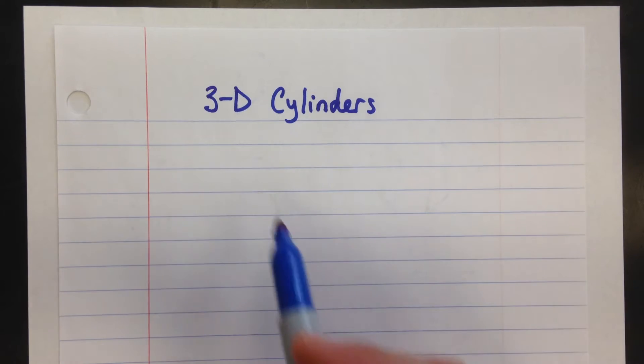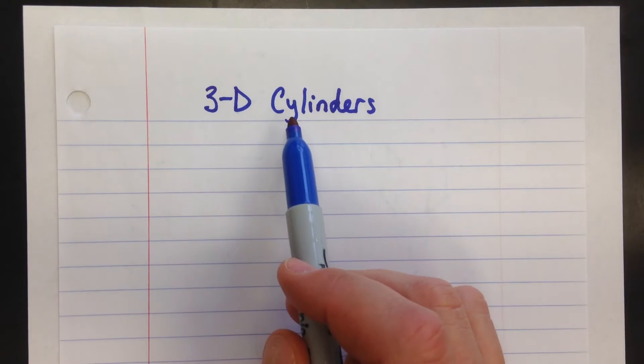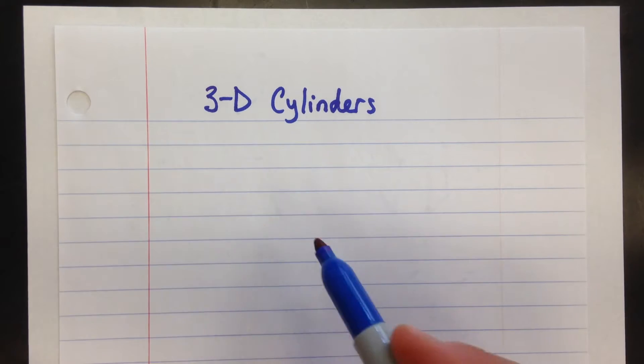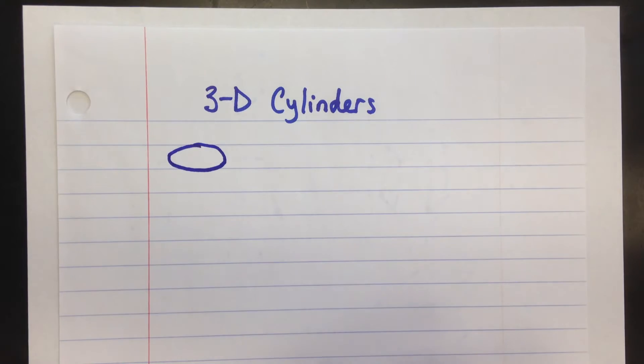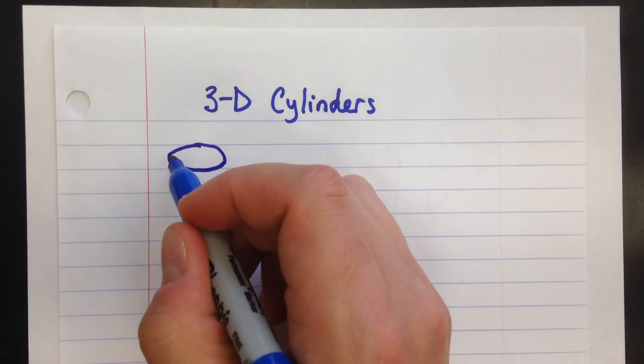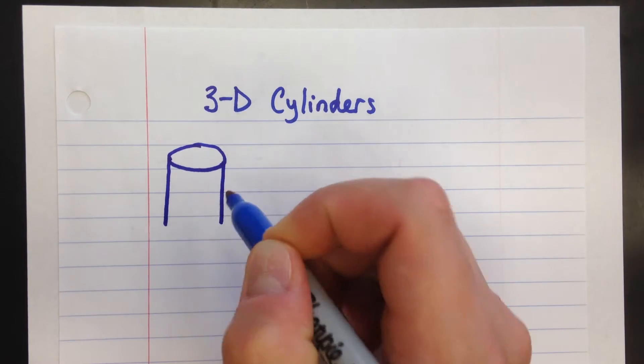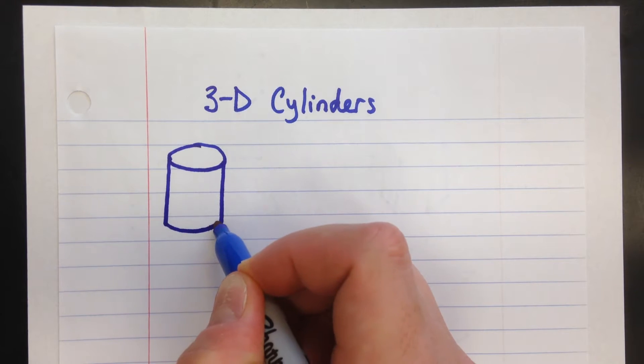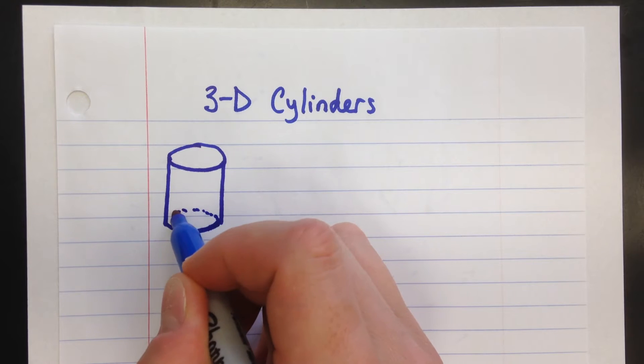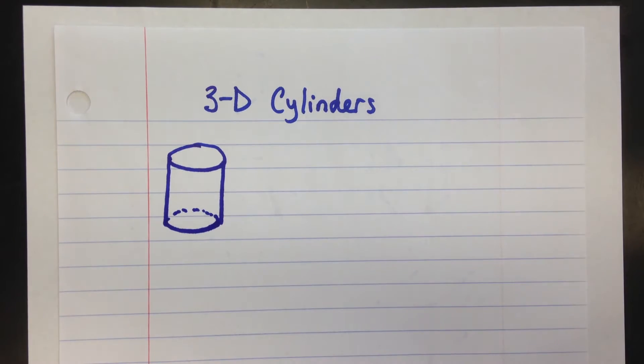Alright geometry fans, today our topic is 3-dimensional cylinders. We're going to start by drawing a cylinder, which is kind of like a can, think of a can of soup. I'm going to draw an oval, two vertical lines down, and then another oval except for the top part which I'm going to make dotted—that's the back part of the can.